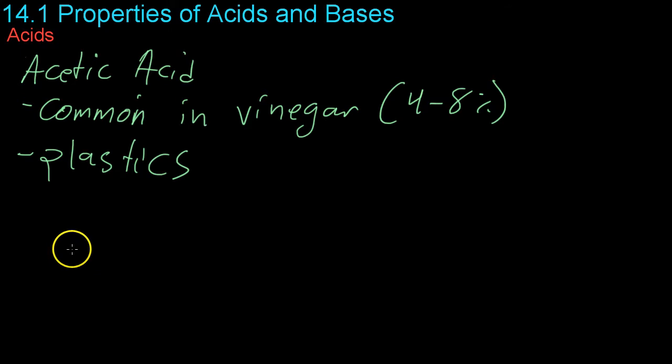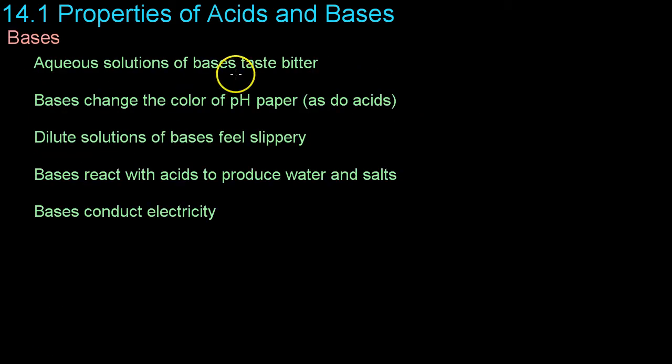Finally we have acetic acid which has a rather large acetate group attached to it and that makes it an oxy acid. Now it's very common in vinegar. Vinegar is actually about four to eight percent acetic acid so it's not super harmful like say sulfuric or hydrochloric acid and it's also used in the production of plastics.